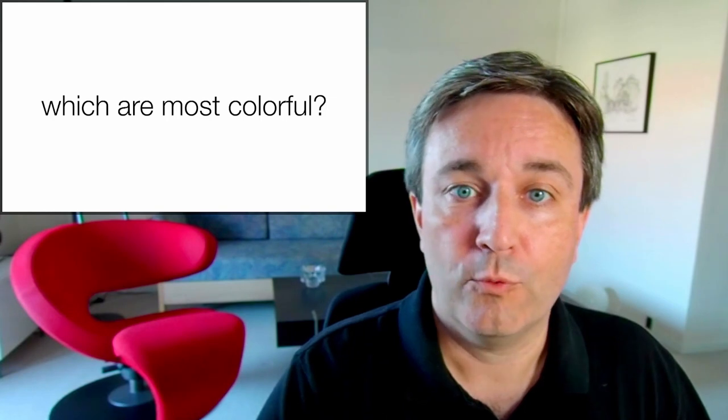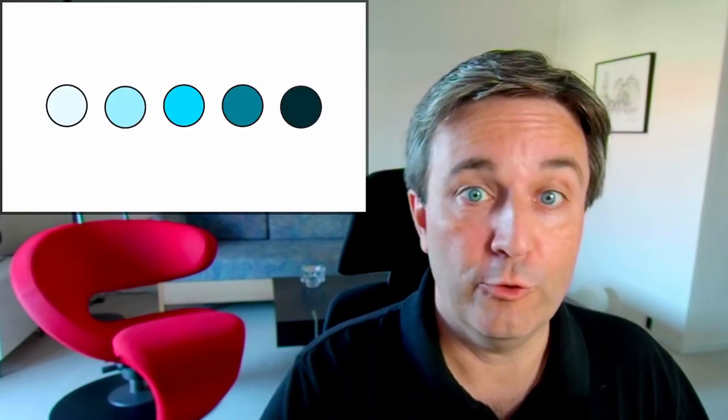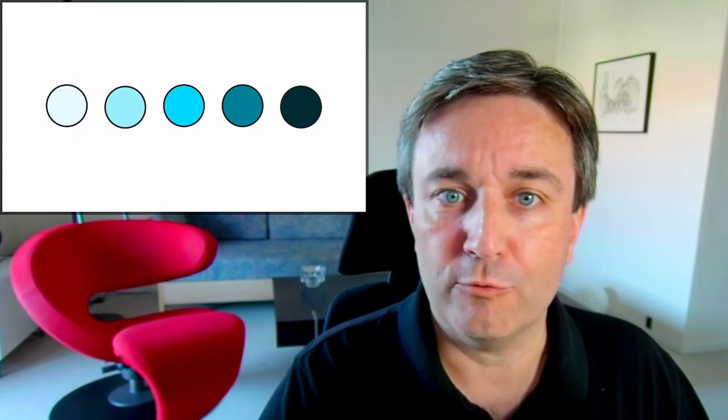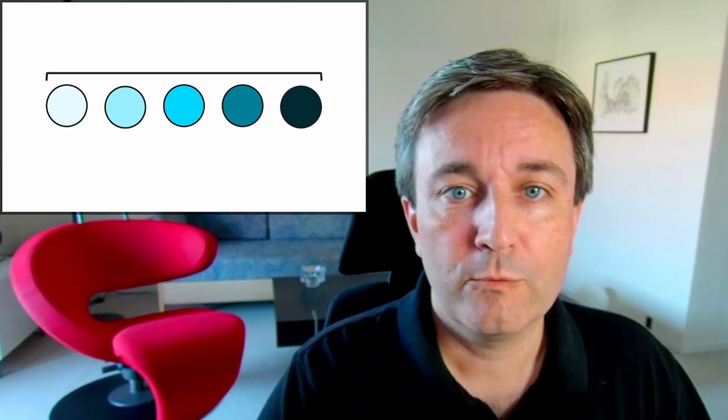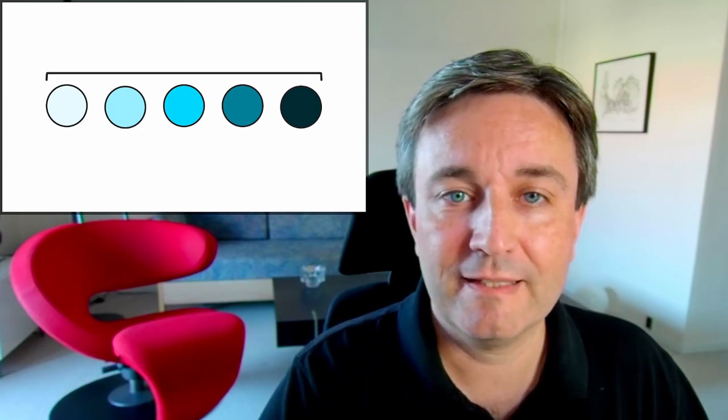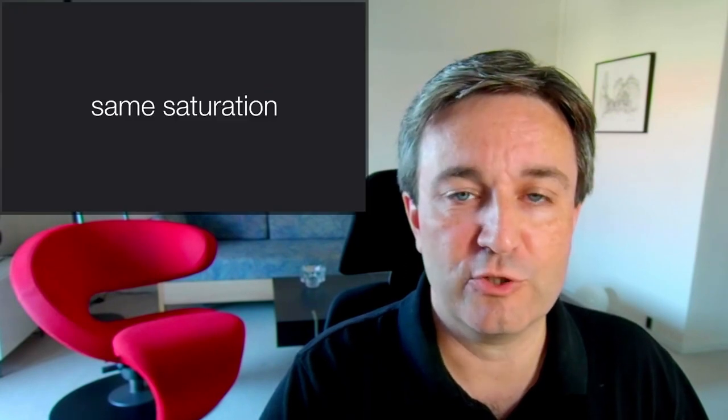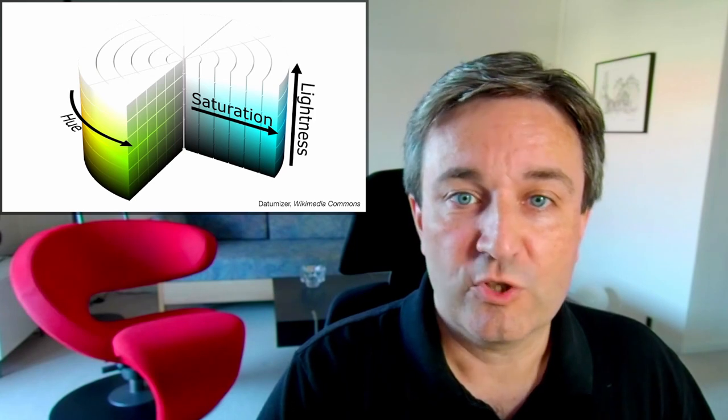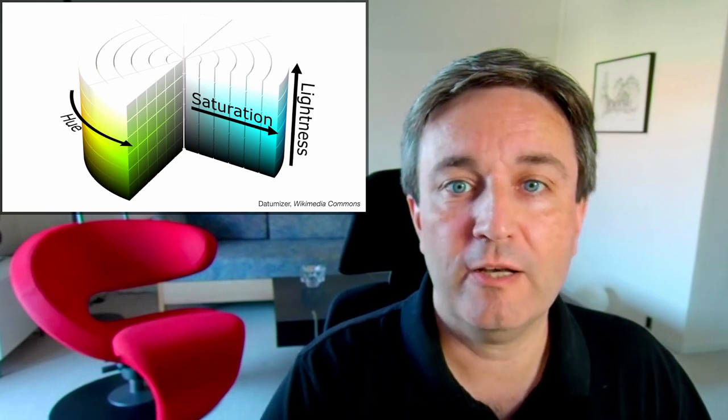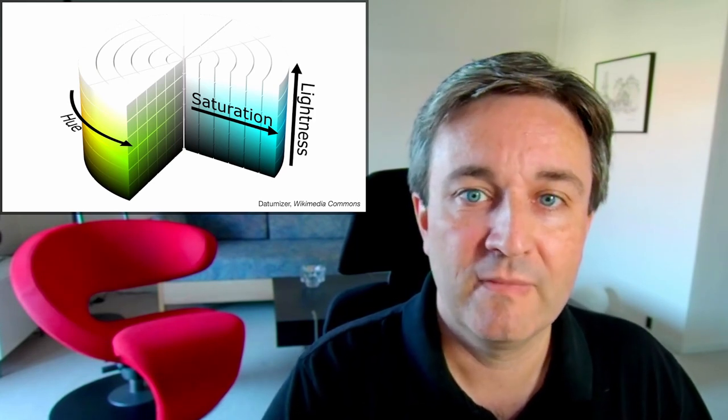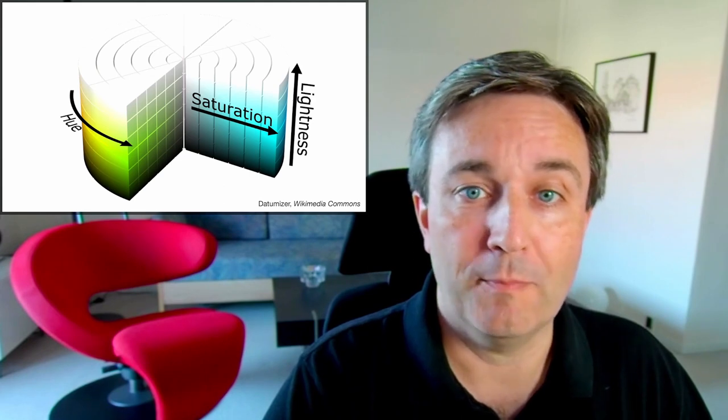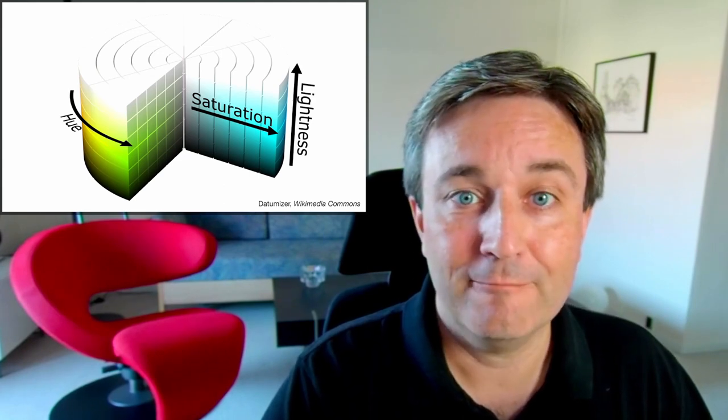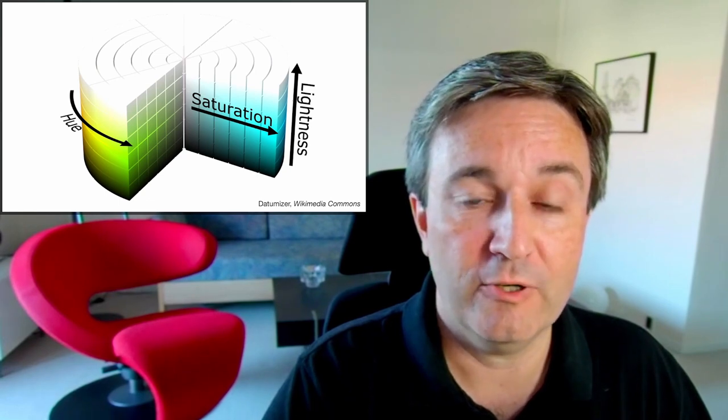So let's ask again, which are the most colorful? We're looking at the same five circles. The one in the center is the most colorful, right? Well, according to this system, they're all five equally saturated. What's happening here? Here I moved along the lightness scale. From white to blue to black is all along the lightness scale at 100% saturation of blue.